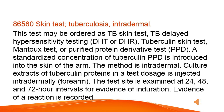Skin test, tuberculosis, intradermal. This test may be ordered as TB skin test, TB delayed hypersensitivity testing, DHT or DHR, tuberculin skin test, MANTU test, or purified protein derivative test, PPD. A standardized concentration of tuberculin PPD is introduced into the skin of the arm. The method is intradermal. Culture extracts of tuberculin proteins in a test dosage is injected intradermally in the forearm. The test site is examined at 24, 48, and 72-hour intervals for evidence of induration. Evidence of a reaction is recorded.